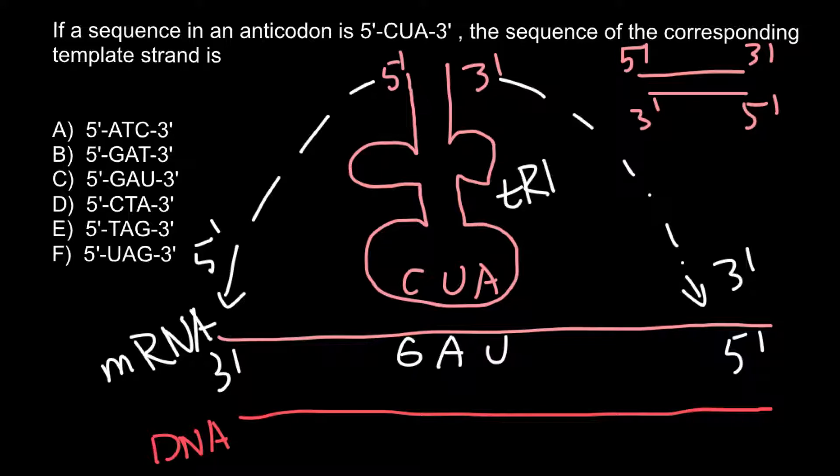This is going to be DNA. Here we have messenger RNA and here we have tRNA. In the DNA we would have this time 5-prime here and 3-prime here. This is going to be the template strand of the DNA from which this messenger RNA has been made.